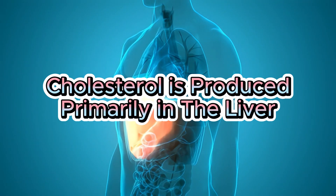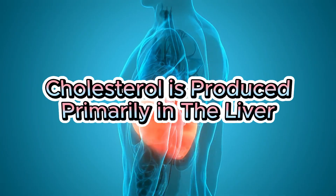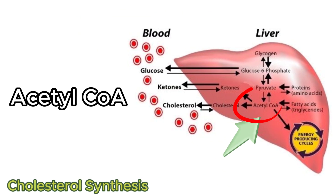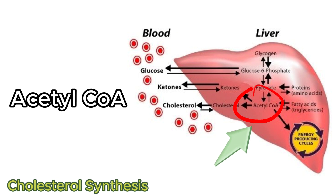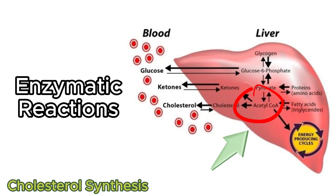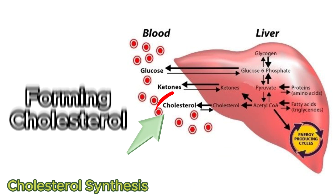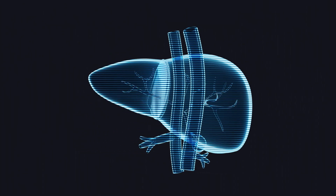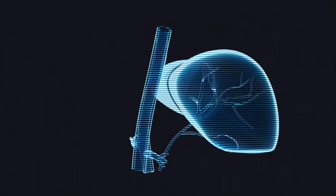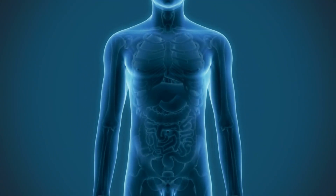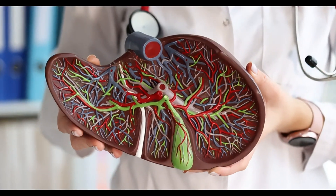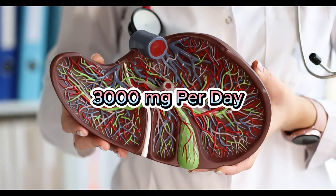Cholesterol is a vital substance produced primarily in your liver. Cholesterol synthesis starts with a precursor molecule called acetyl-CoA, which undergoes a series of enzymatic reactions in the liver cells, ultimately forming cholesterol. The liver is a highly efficient organ responsible for synthesizing cholesterol in the body. On average, the liver produces about 1,000 mg of cholesterol per day, with some sources citing as much as 3,000 mg per day.